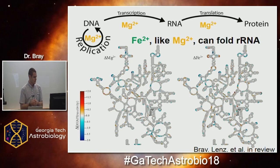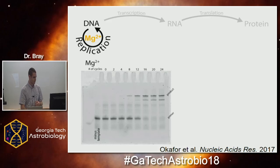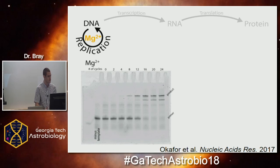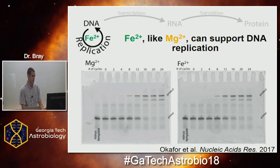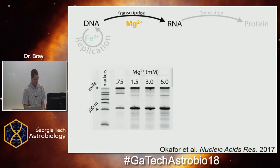Possibly iron really looks like a substitute, so we went in to see if it could be a functional substitute. We first looked at DNA replication. This is a gel of a PCR reaction — as you go through more cycles you get more product DNA, and by around cycle 12 to 16 you have plenty of product. When we swapped out magnesium for iron, we got basically the exact same gel.